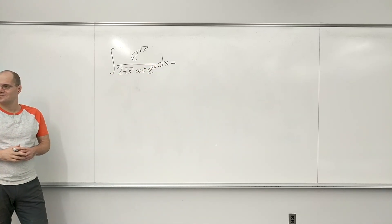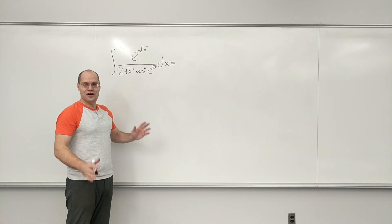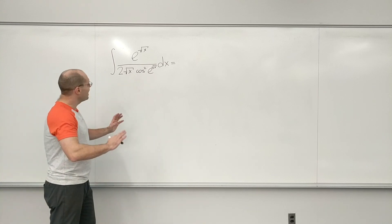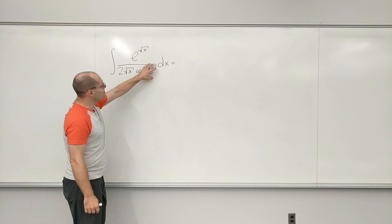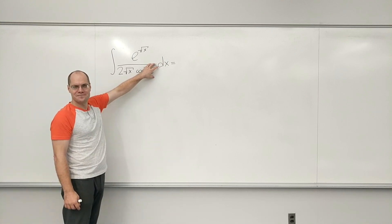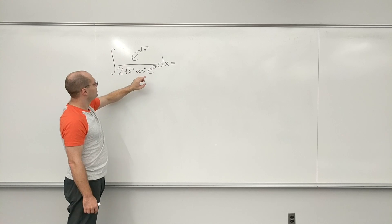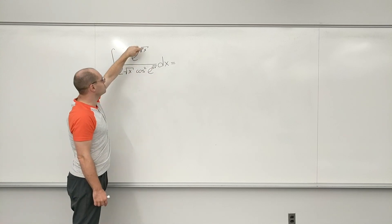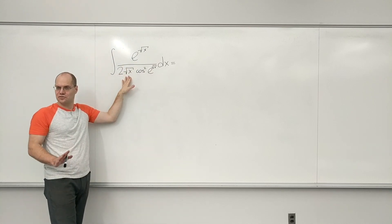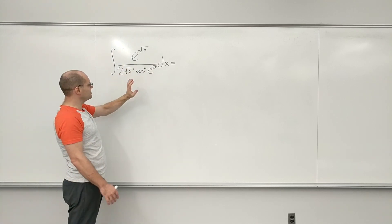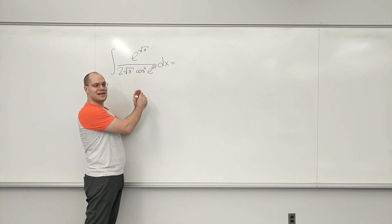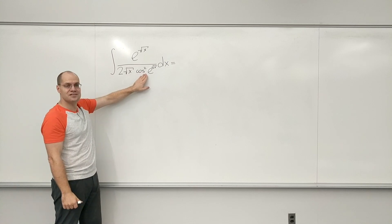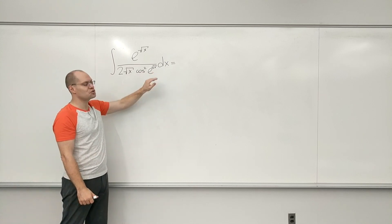Before you start writing, you have to see the telltale sign of having used the chain rule. These two elements stay together. We have this expression, its derivative, and then we have the derivative of square root of X. That's a good sign. When you pay attention to the most complicated element, it would be cosine squared of e to the square root of X.